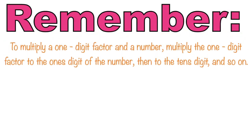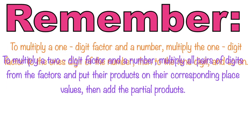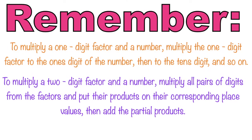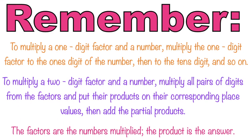Always remember, children: to multiply a one-digit factor and a number, multiply the one-digit factor to the one's digit of the number, then to the tenth digit, and so on. To multiply all pairs of digits from the factors and put their products on their corresponding place values, then add the partial products. The factors are the numbers multiplied and the product is the answer.